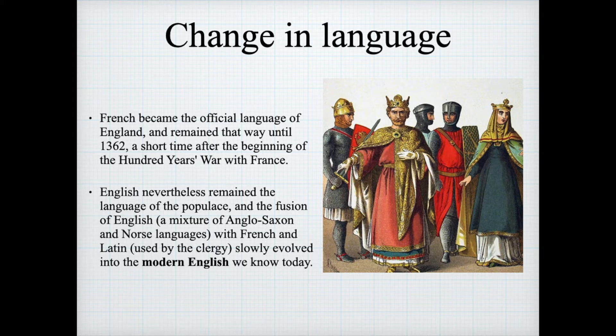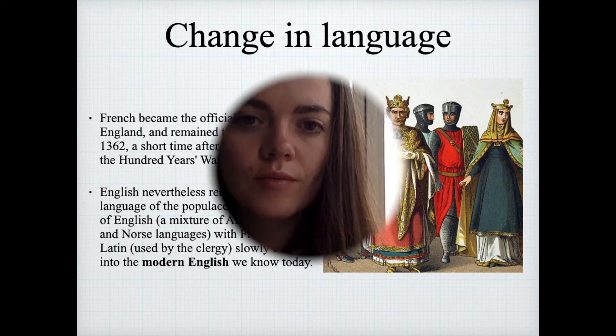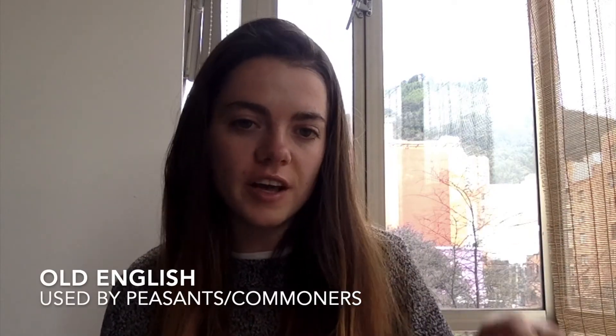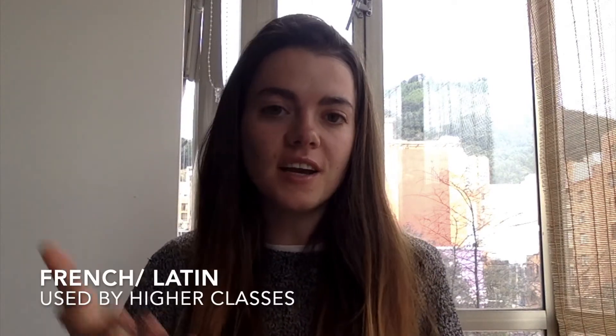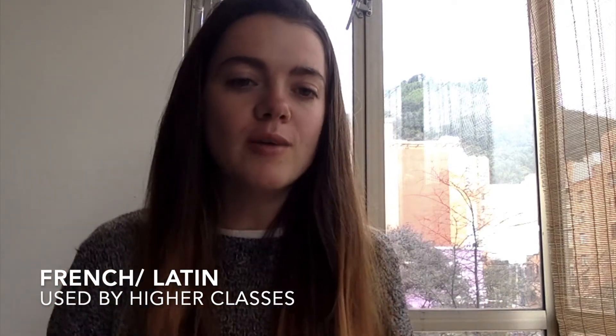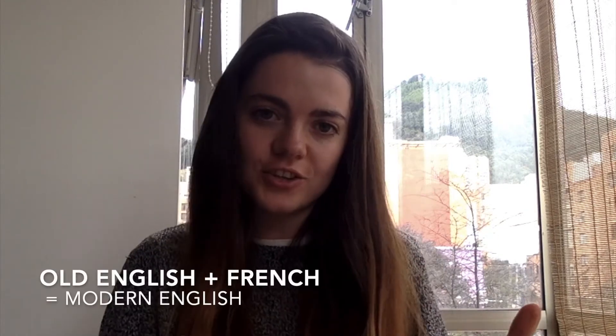French remained the official language of England until 1366. However, the general population continued to speak Old English — the mixture of the Anglo-Saxon and Norse languages — and French and Latin was used by the clergy. Both of these slowly evolved into the modern English we know today. The English that we use today was a result of Old English, used by the peasants and common folk in England, mixed with French and Latin used by the higher classes. They merged over time and eventually formed the English that we know today.